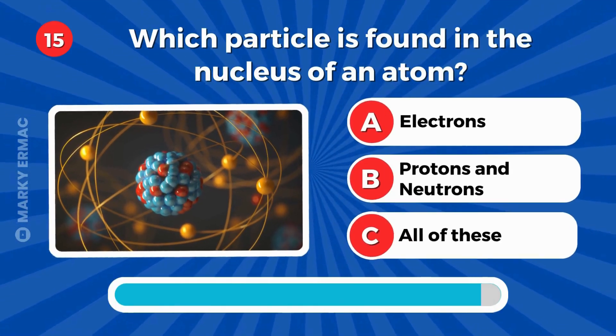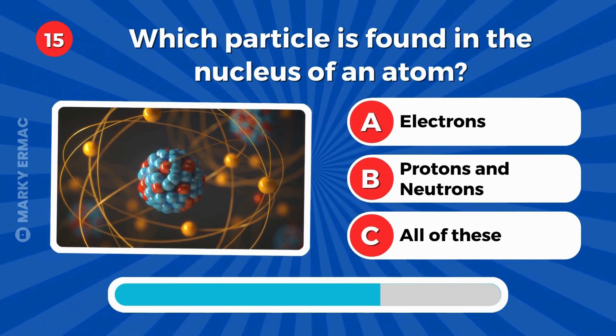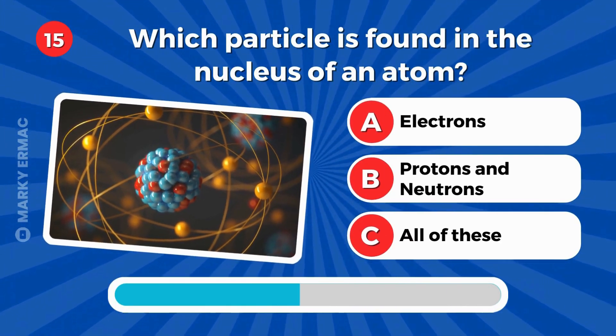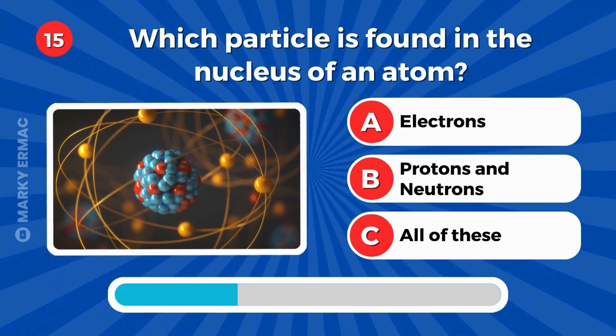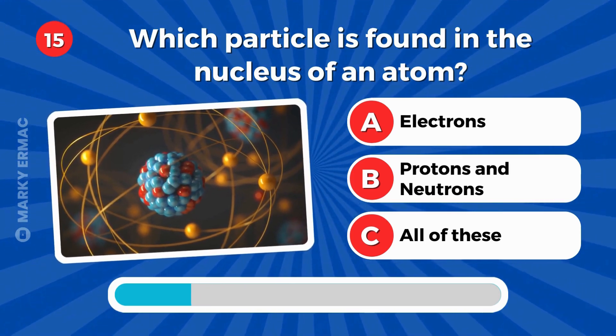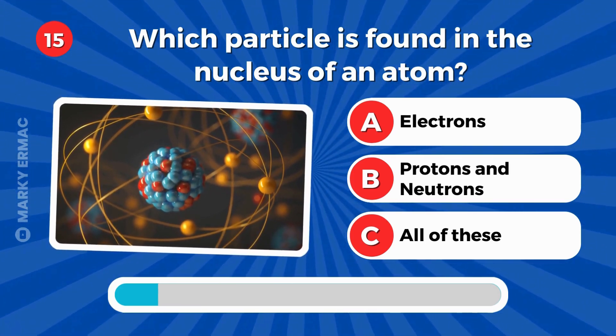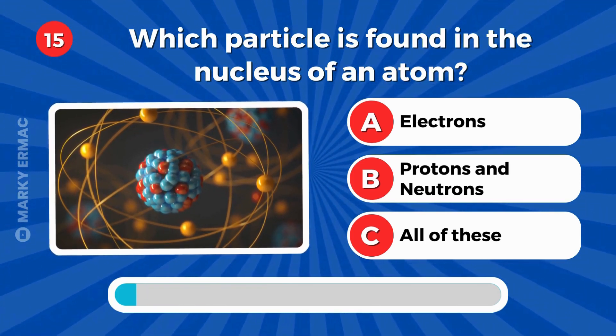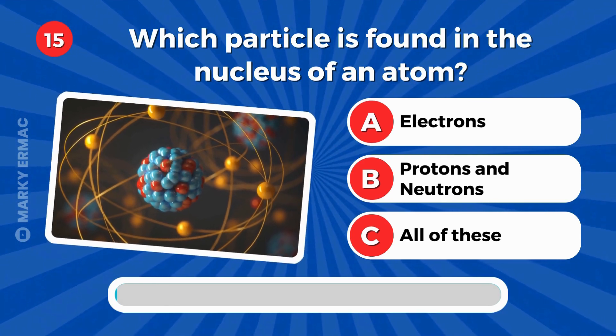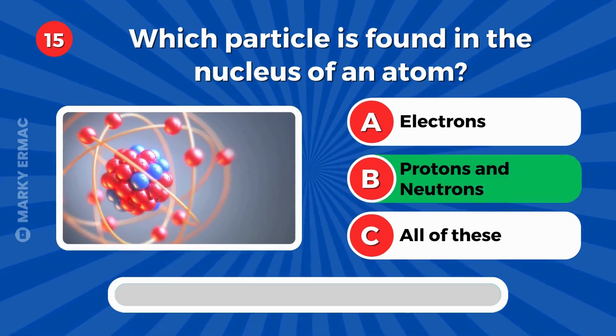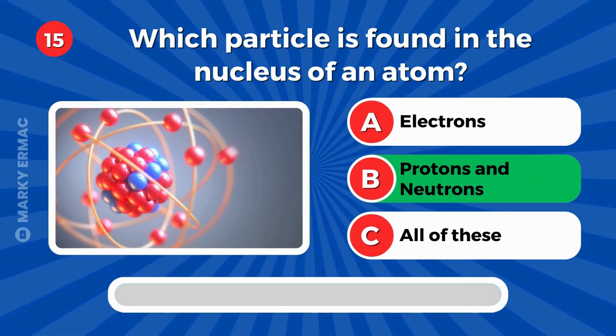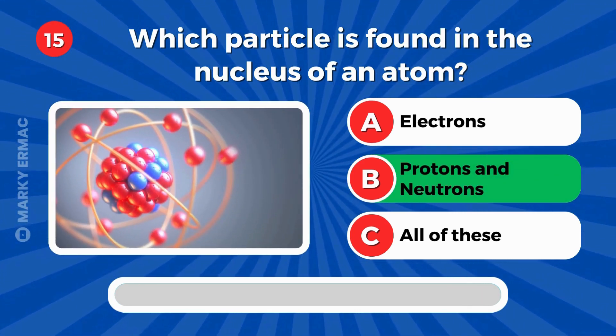Which particle is found in the nucleus of an atom? Electrons, protons, and neutrons — or all of these? It's protons and neutrons.